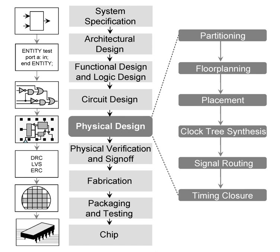The main steps in the ASIC physical design flow are: design netlist after synthesis, floor-planning, partitioning, placement, clock-tree synthesis (CTS), routing, physical verification, and GDS-2 generation. These steps are just the basics. There are detailed PD flows that are used depending on the tools used, the methodology, and technology.